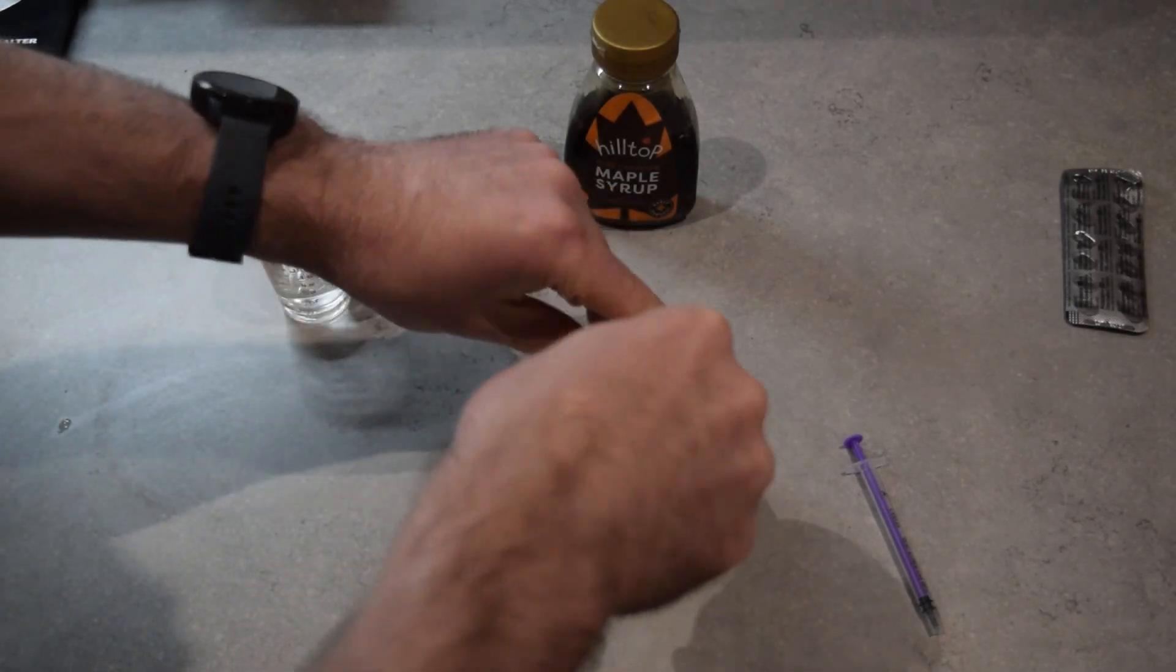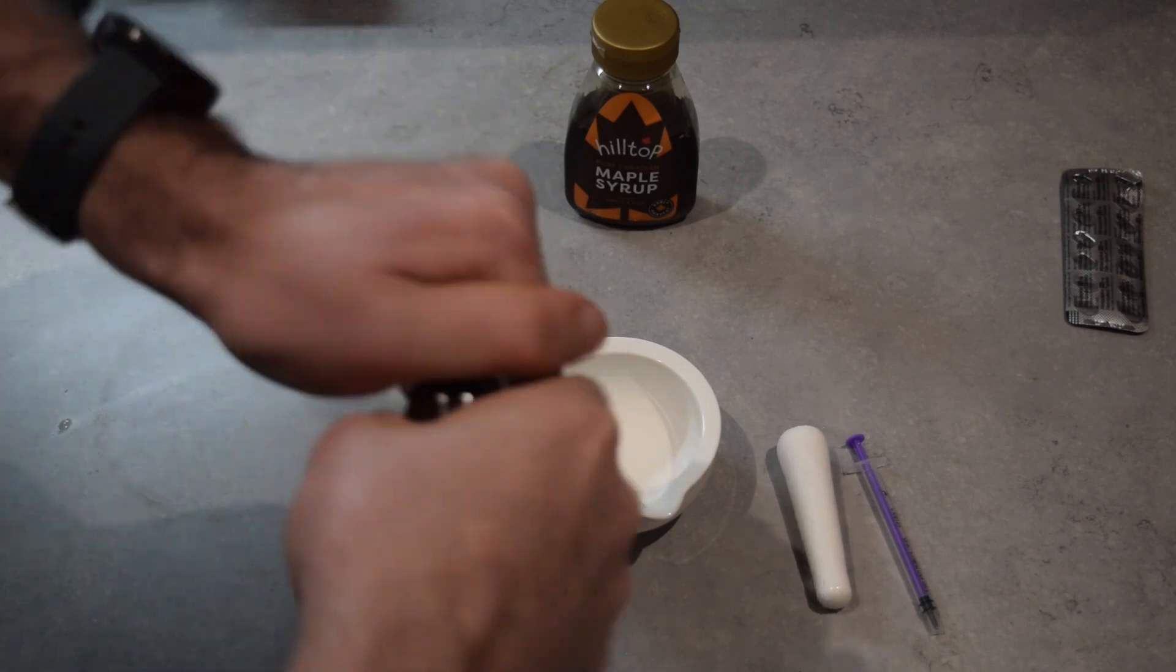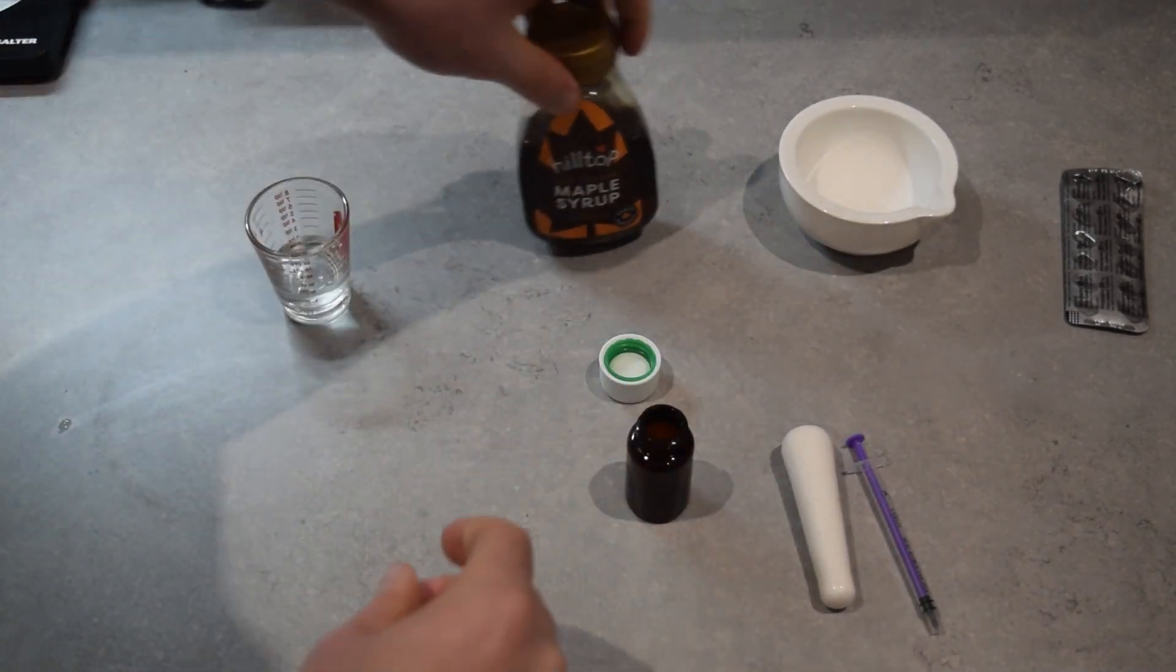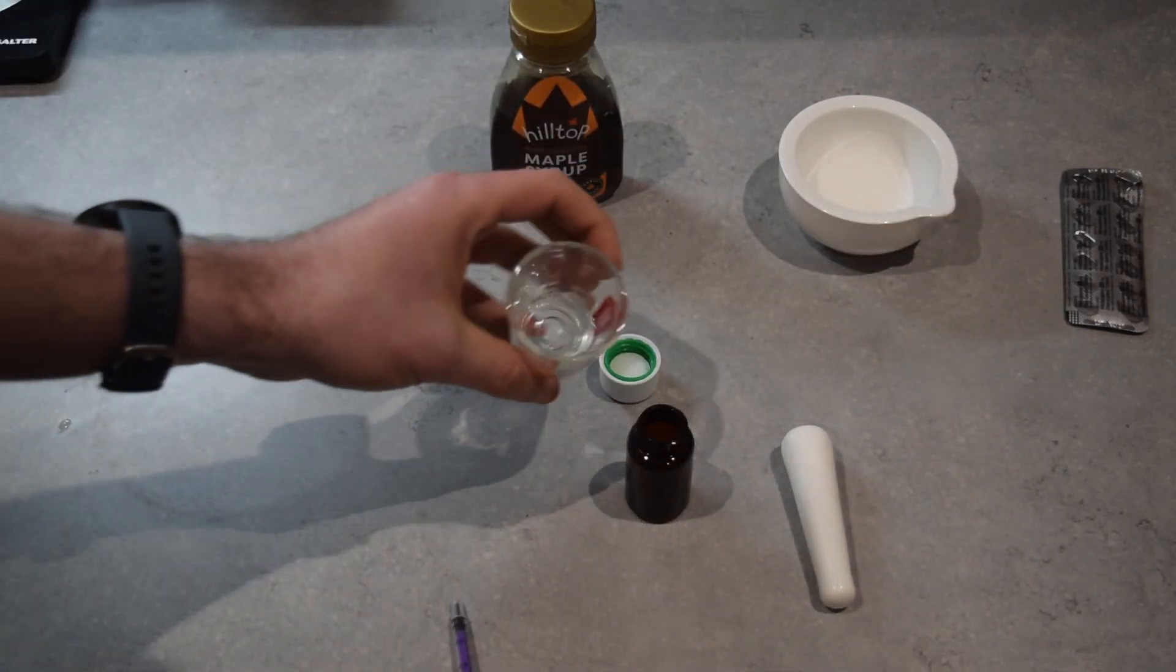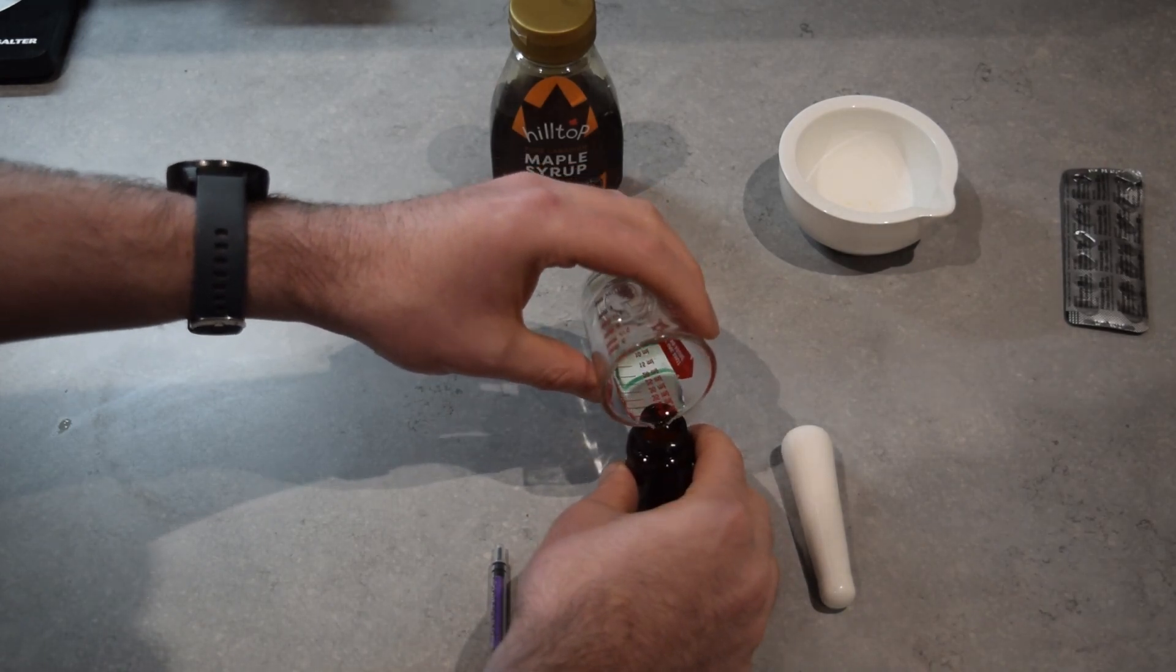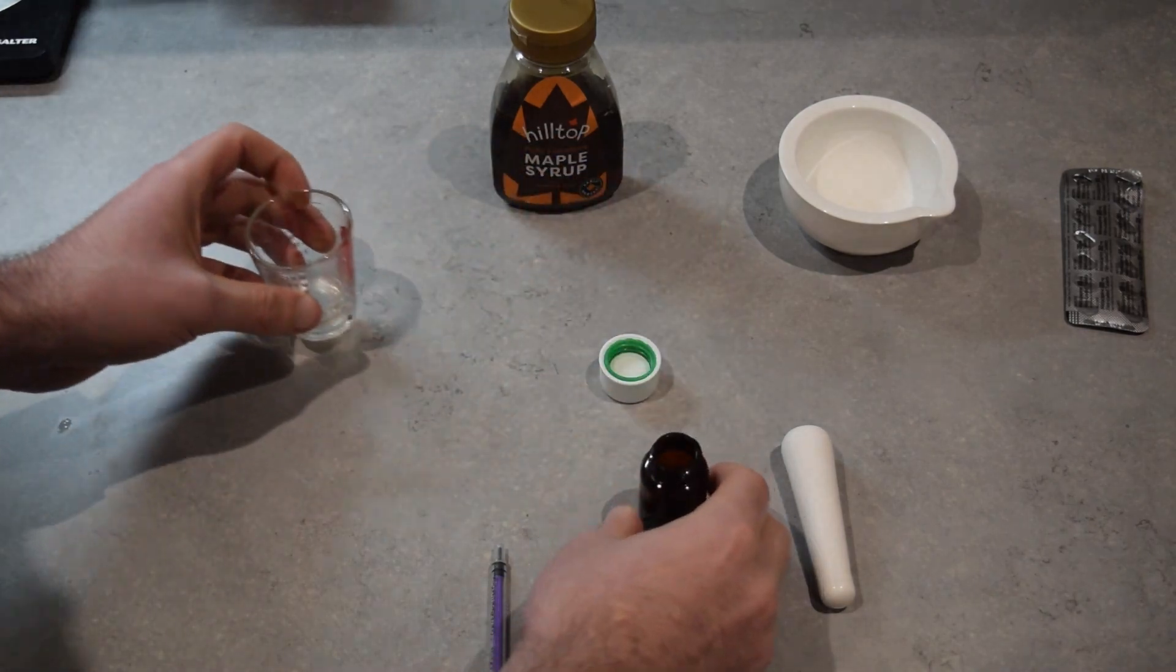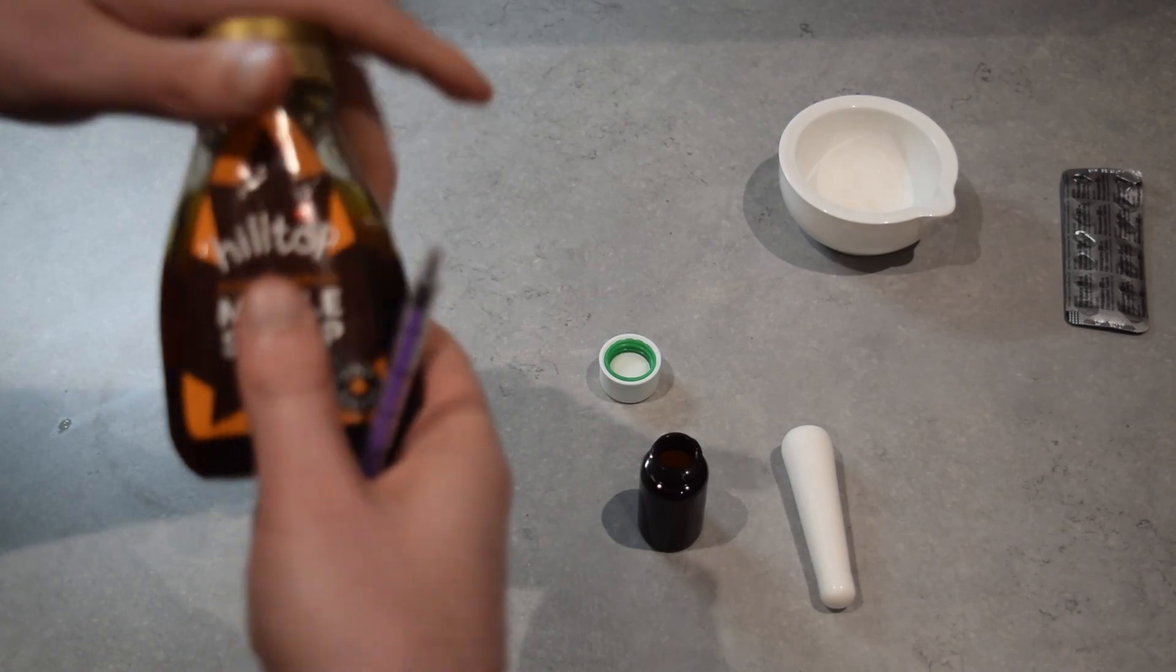Once that's done, you prepare your fluid, your suspension fluid. So for this, I'm going to use 10 milliliters of water. So those are 10 milliliters of water. And I'm going to use 10 milliliters of maple syrup.